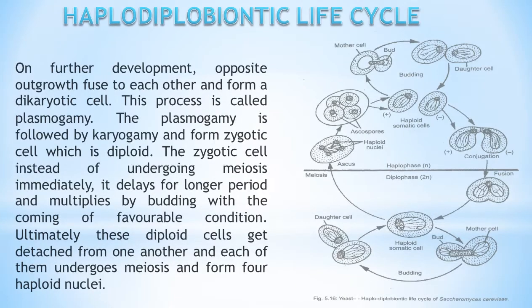On further development, the opposite outgrowths fuse to each other and form a dikaryotic cell. This process is called plasmogamy.